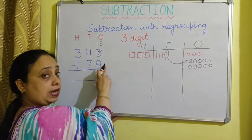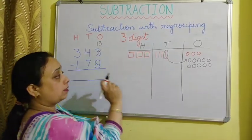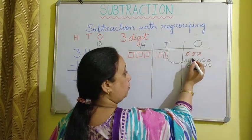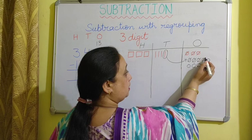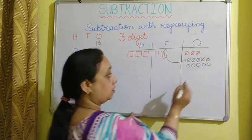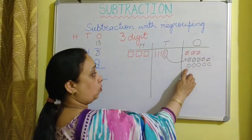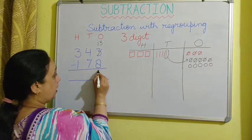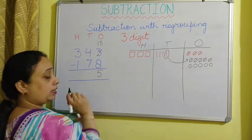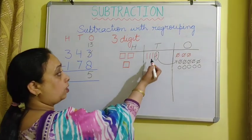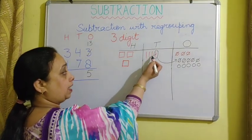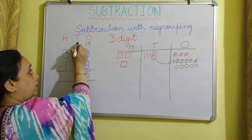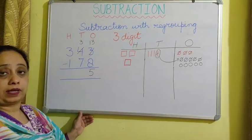We take away 8 ones from 13 ones, and 5 ones remain. So we write 5. Now, since we borrowed 1 ten, we no longer have 4 tens — we have 3 tens. So I cross out 4 and write 3.